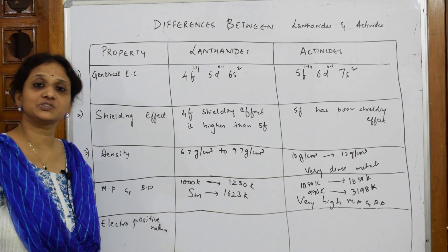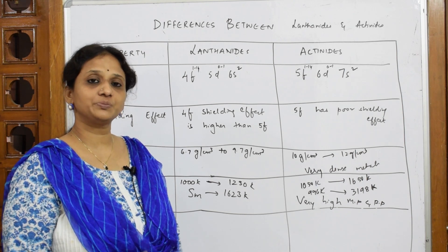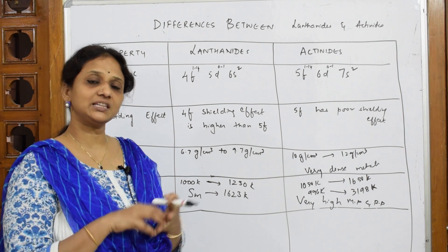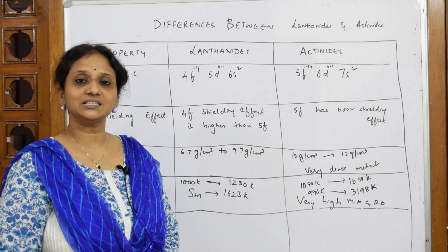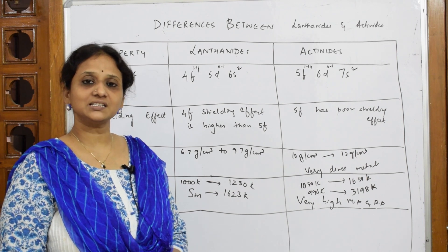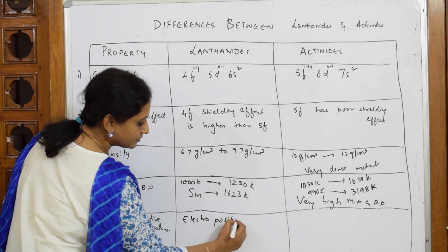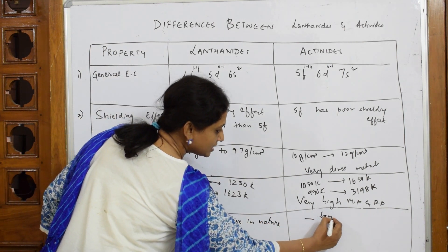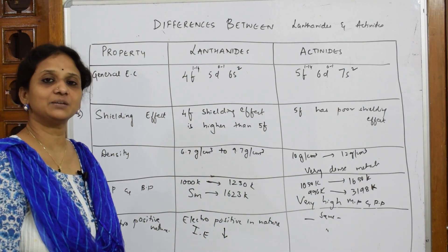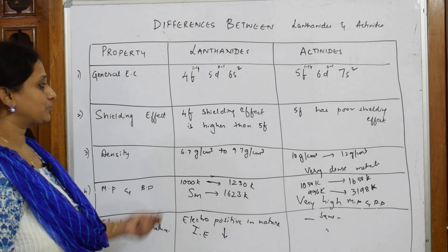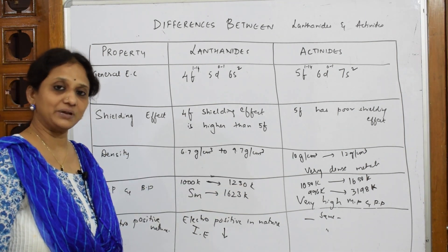Regarding electropositive character — the ability to donate electrons — this depends on ionization enthalpy. When ionization enthalpy is very low, electrons can be easily removed and donated to an electronegative element. In Lanthanides, the ionization enthalpy is low, so they are electropositive. Actinides are also electropositive in nature for the same reason.